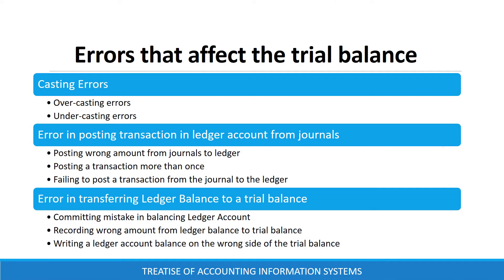Errors that affect the agreement of the trial balance include casting errors, errors in posting transactions in ledger accounts from journals, and errors in transferring ledger account balances to the trial balance. Casting errors are errors that occur when adding up transactions in a column. Overcast means getting a higher figure than the actual figure, while undercast means getting a lower figure than the actual figure.